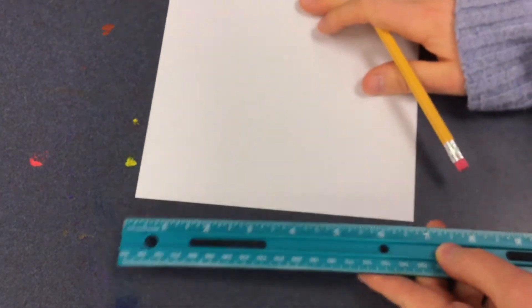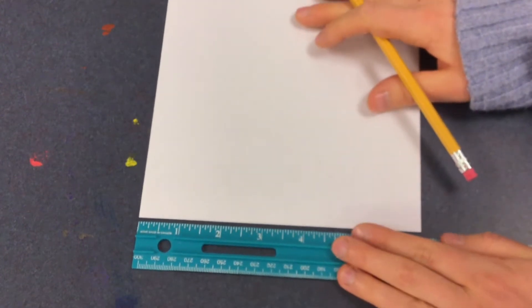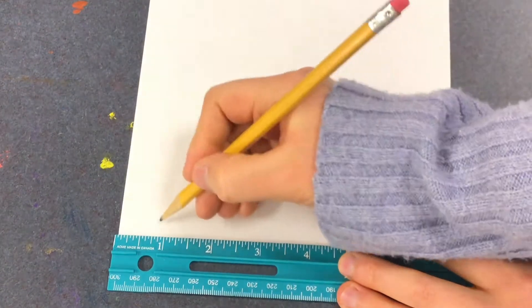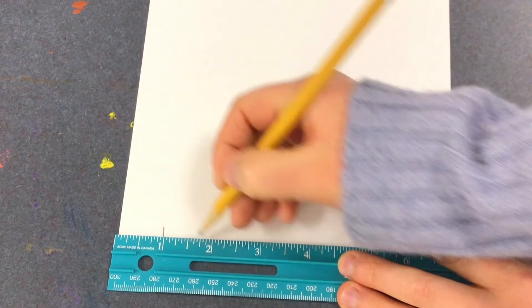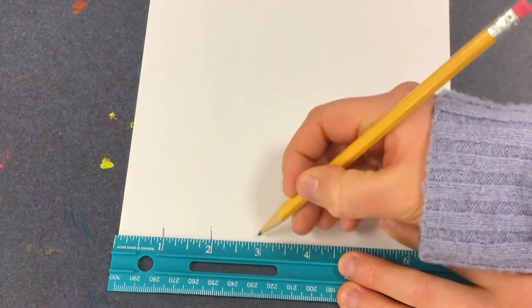Set your ruler up against one edge of the paper as if you're going to measure it. Then take your pencil and draw small lines across the edge of the paper one inch apart.